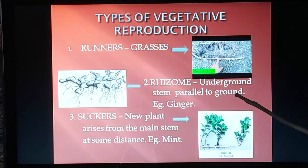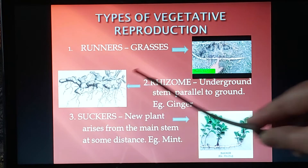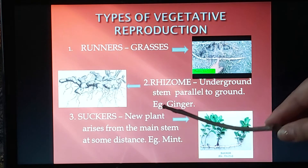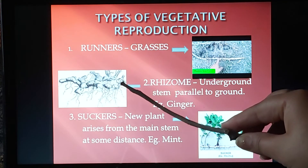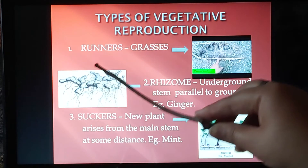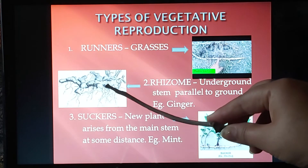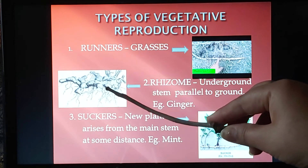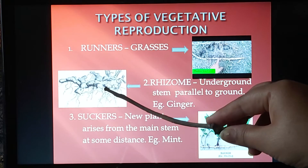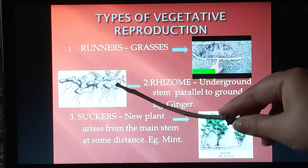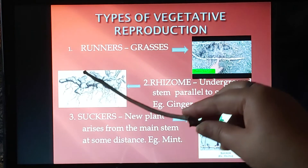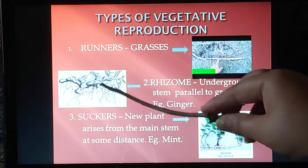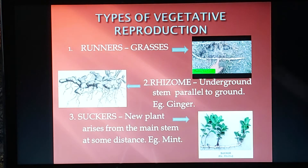The second method is rhizomes. A rhizome is an underground stem located parallel to the surface of the ground. The best example is ginger. As shown in this picture, the rhizomes lie below the surface of the soil, running parallel to it, and they can propagate to give rise to a new plant body.